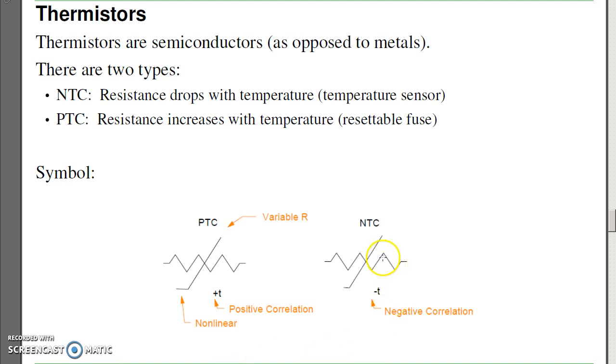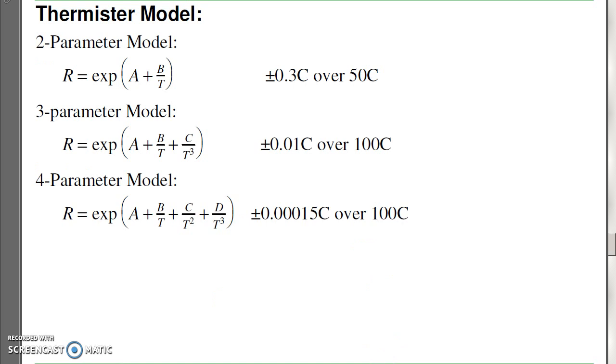The one we'll be using to measure temperature is a negative temperature coefficient thermistor. The model for a thermistor depends on how accurate you want it to be. It's exponential in nature, and the temperature is in absolute, or in Kelvin. We've got the two-term, three-term, four-term parameters. We'll be using the two-term parameter.